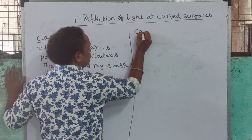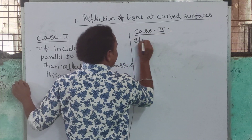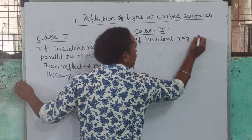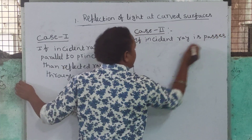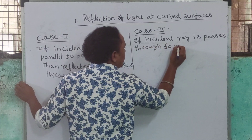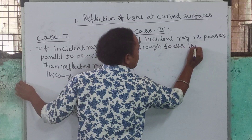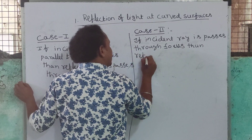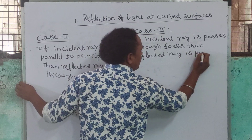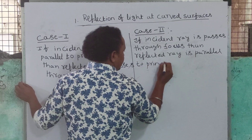Case 2: if the incident ray passes through the focus, then the reflected ray is parallel to the principal axis.